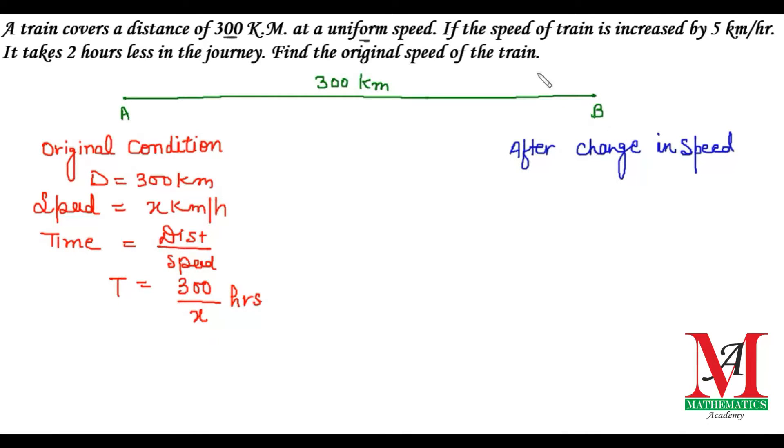Now, after changing the speed, the train's speed is increased by 5 kilometers per hour. If the speed is increased by 5 km/hr, the distance remains the same at 300 kilometers. The speed becomes x + 5 kilometers per hour. The formula for time is the same: distance over speed. So the time taken by the train is 300/(x+5) hours.